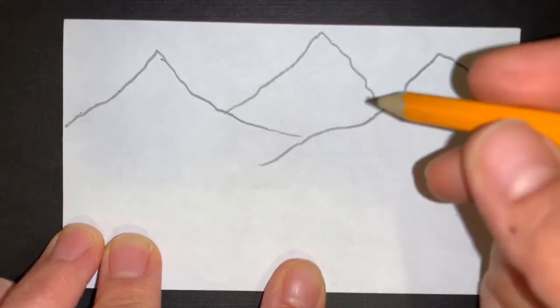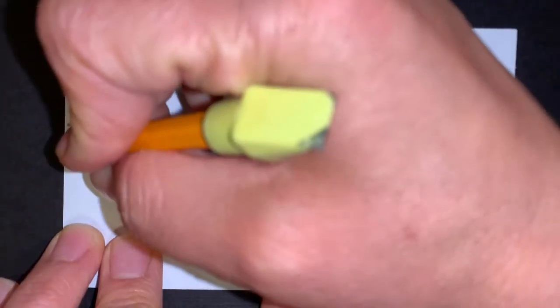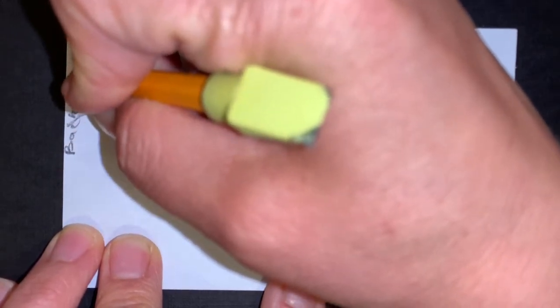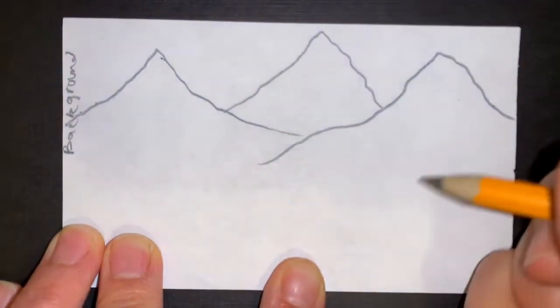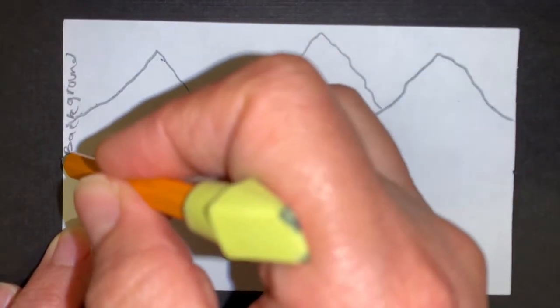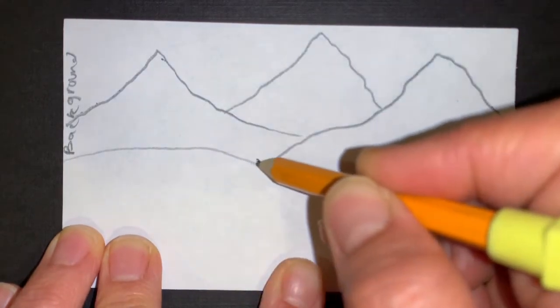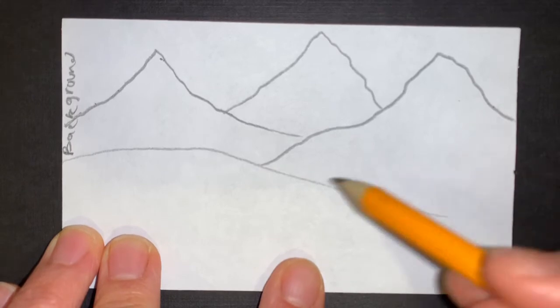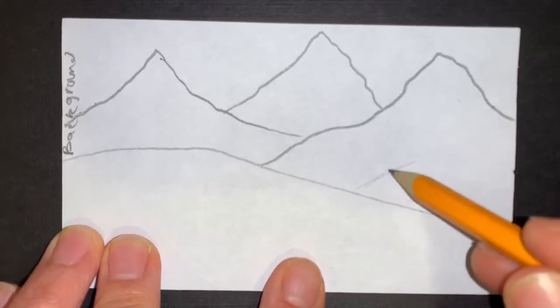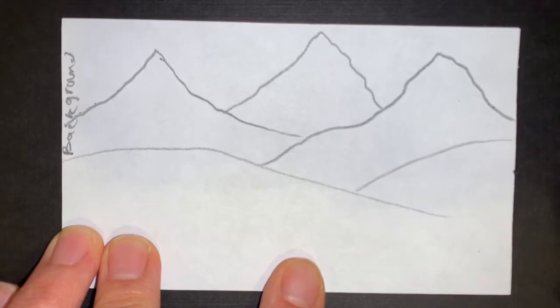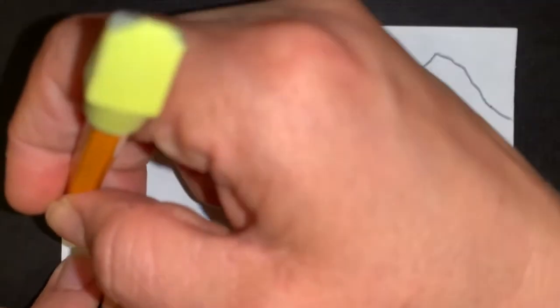This is our background. So we can always label this background if we wanted to. And now we need to work on our middle ground. So we're going to create a gentle curving line that goes in front and that will make a hill. And then we can have another one coming up out of that. And that gives us some options to work with later. So this is our middle ground.